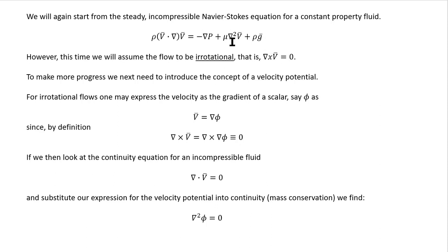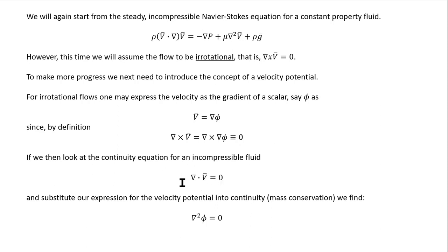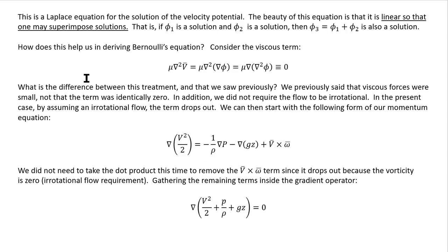This time, instead of assuming the viscous term is small, we assume the flow is irrotational — del cross v equals zero. To make progress, we introduce the velocity potential: for irrotational flows the velocity can be expressed as the gradient of a scalar phi, so v equals grad phi. By definition, del cross grad phi equals zero (a vector identity), confirming irrotationality. Substituting into the incompressible continuity equation del dot v equals zero gives del squared phi equals zero — Laplace's equation — which comes from mass conservation.